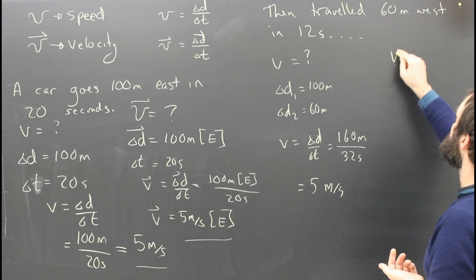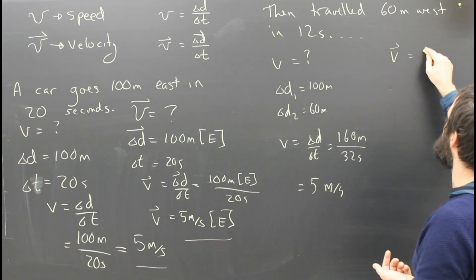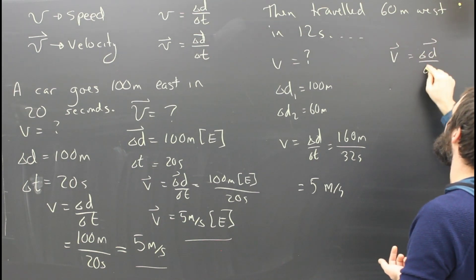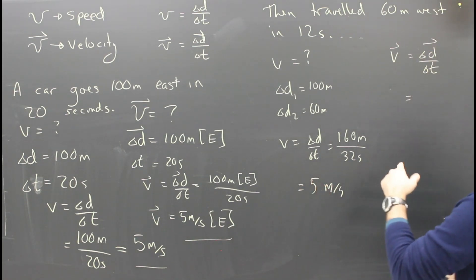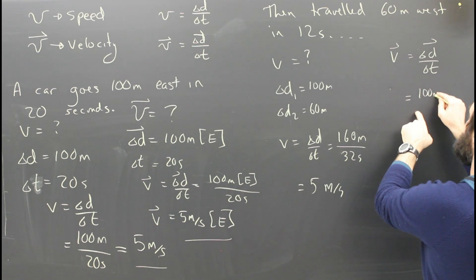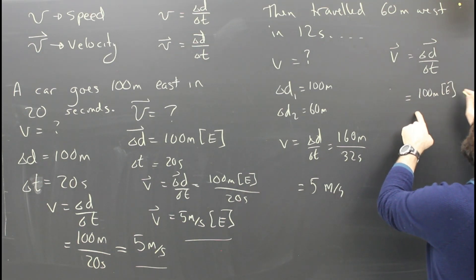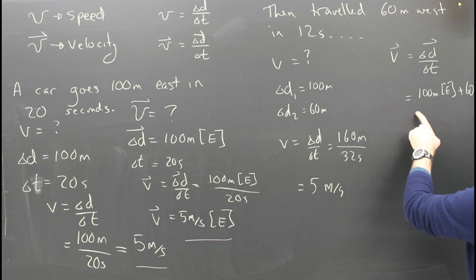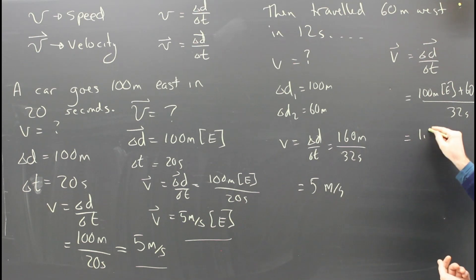But what about the velocity? The velocity is going to be the displacement over the time. Just like the last video, what's the displacement now? It's 100 meters east plus 60 meters west divided by 32 seconds. So it's 40 meters divided by 32.